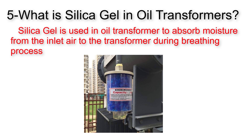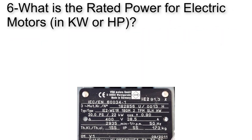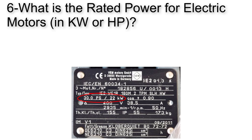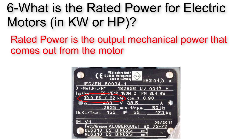Another question: what is the rated power in kilowatt or horsepower shown on the electric motor nameplate? This is a simple yet tricky question. The rated power on the nameplate represents the output mechanical power coming out of the motor — not the input electrical power. To calculate the input electrical power, we need the efficiency factor.